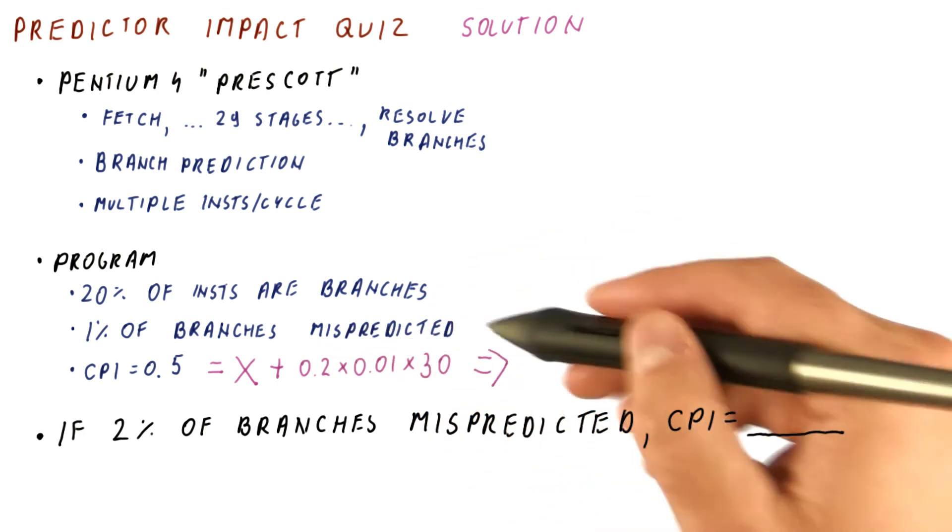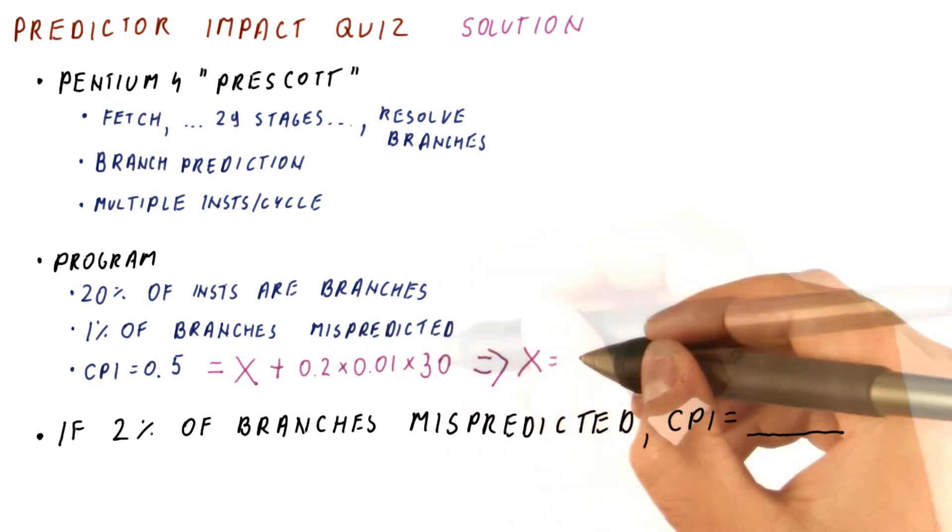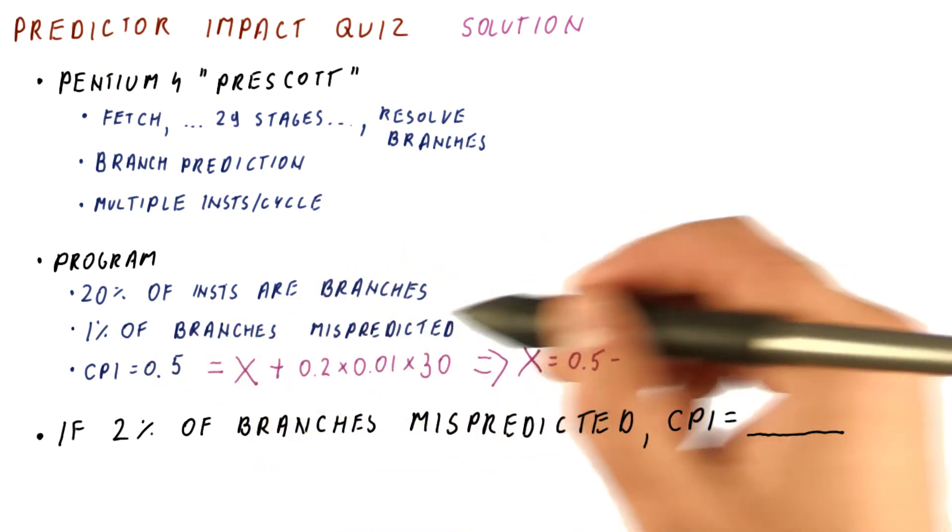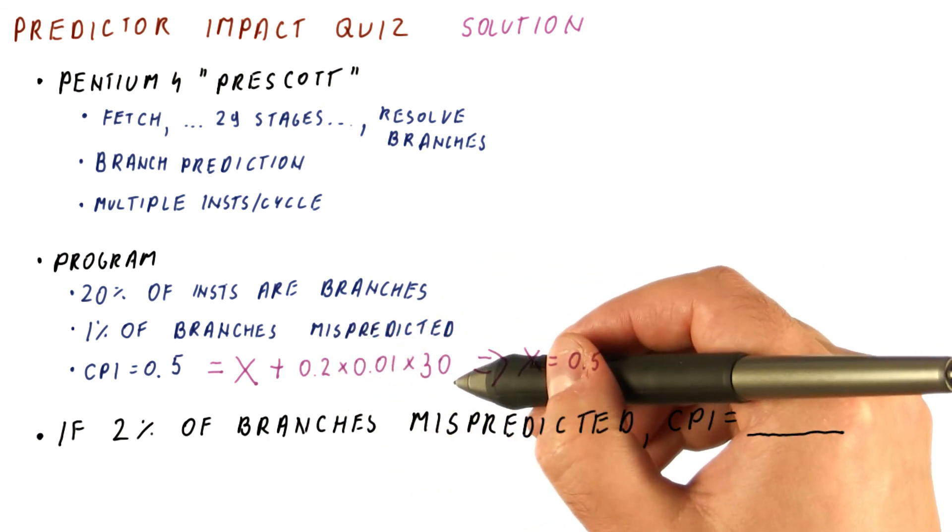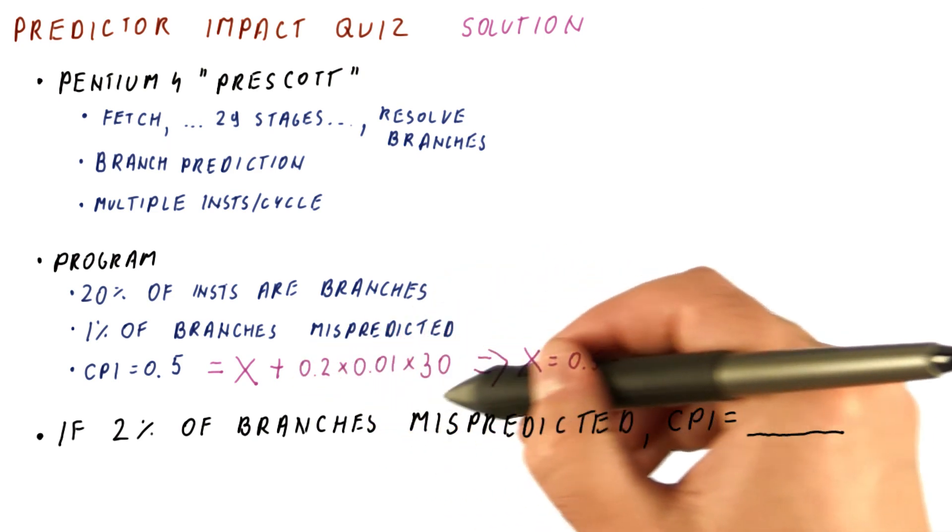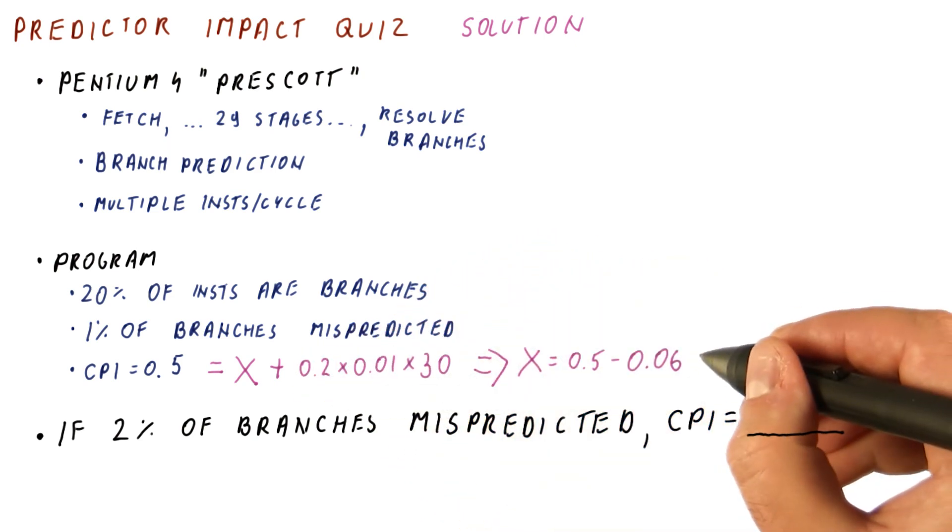That means the ideal CPI equals the actual CPI we're getting minus the CPI penalty from branches. If we multiply this out, we get 0.06.